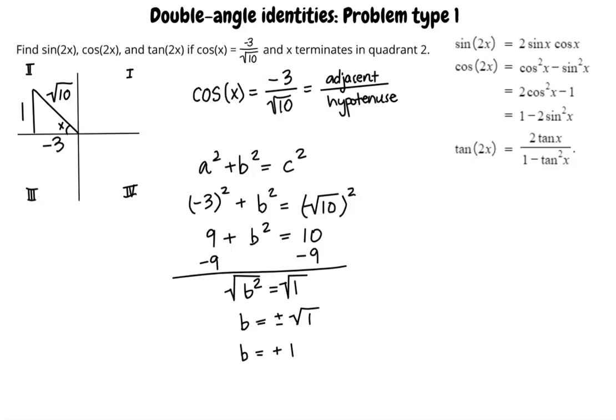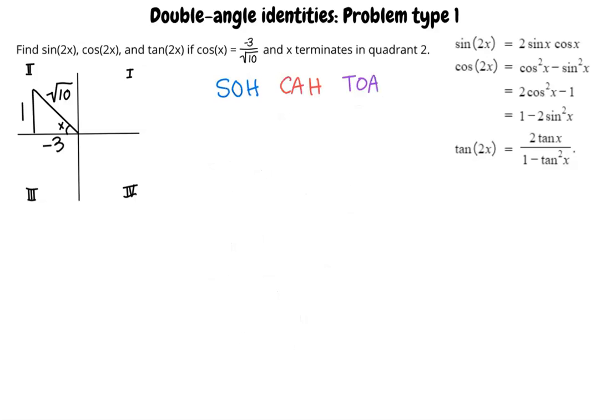Now that we have determined all sides of the triangle, we can find the values for sine of x, cosine of x, and tangent of x. Again, using SOH CAH TOA, we find that sine of x equals 1 over square root of 10. We were already given cosine of x in the problem statement. And tangent of x equals 1 over negative 3.